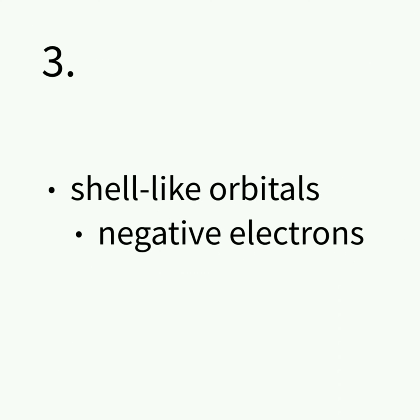Atoms have shell-like orbitals surrounding the nucleus, and within these orbitals are negative electrons that travel around the nucleus.